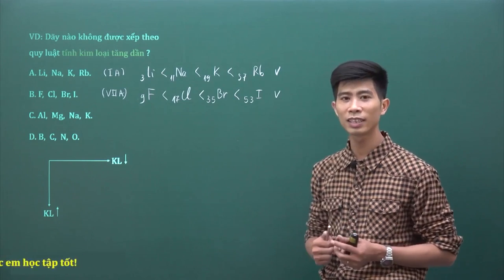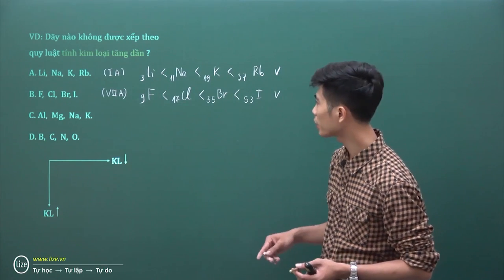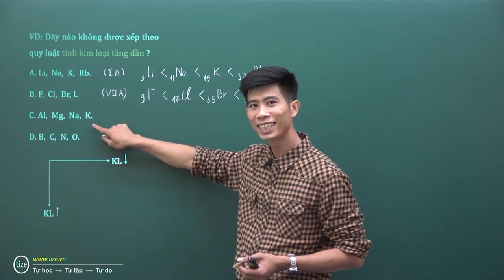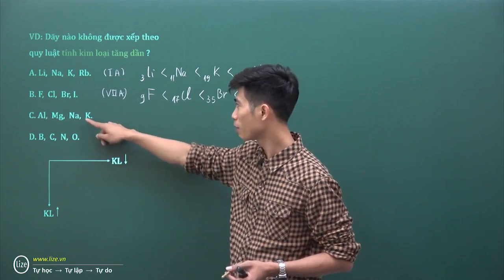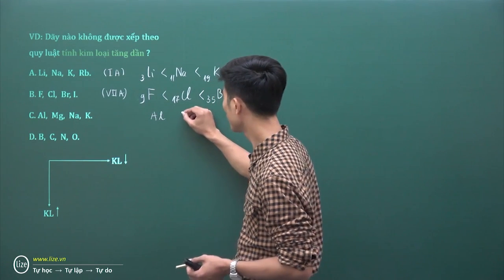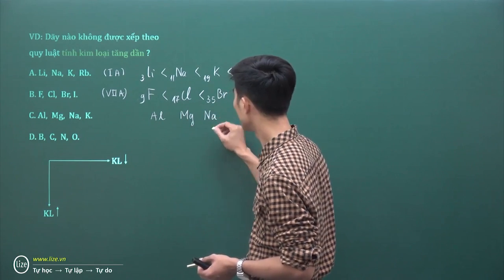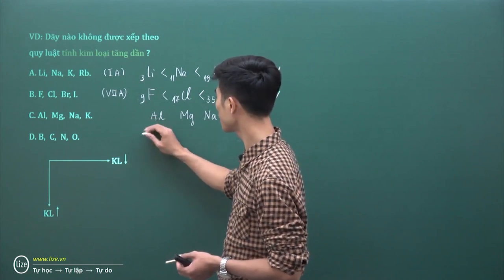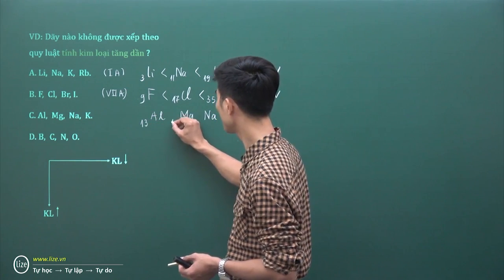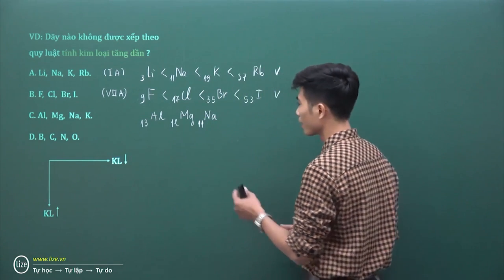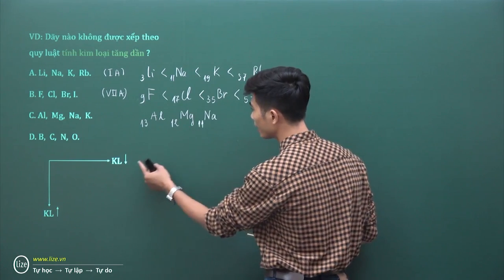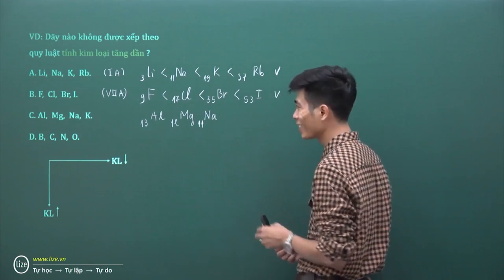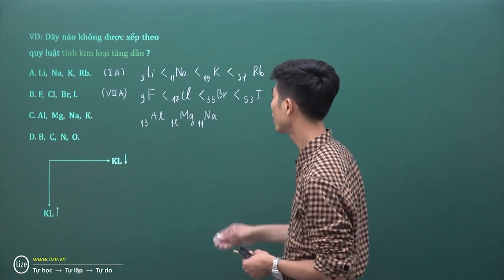Đáp án C gồm Nhôm, Magie và Natri - ba nguyên tố thuộc chu kỳ 3. Sắp xếp theo chiều giảm dần điện tích hạt nhân: Nhôm Z=13, Magie Z=12, Natri Z=11. Trong cùng một chu kỳ, sắp xếp theo chiều giảm dần điện tích hạt nhân thì tính kim loại sẽ tăng. Do đó dãy này cũng sắp xếp theo chiều tính kim loại tăng dần.